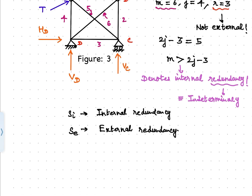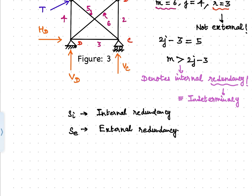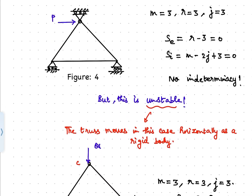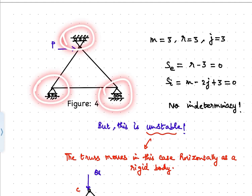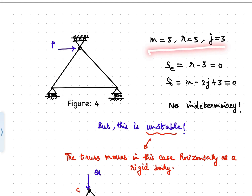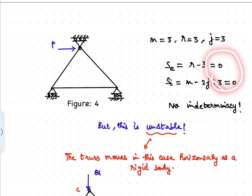Hereafter, we will represent internal redundancy or indeterminacy — these terms are synonymous — as SI, and external redundancy as SE. In Figure 4, a truss is supported on three rollers, where M, J, and R are all 3. Using the formulas SE equals R minus 3 and SI equals M minus (2J minus 3), both are equal to zero, suggesting there is neither external nor internal static indeterminacy.